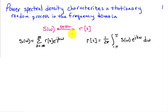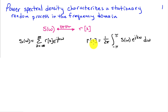We have that S of omega is the sum from k equals minus infinity to infinity of r of k times e to the minus j k omega, or equivalently that r of k is 1 over 2 pi times the integral from minus pi to pi of S of omega times e to the j k omega d omega.